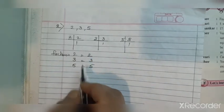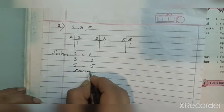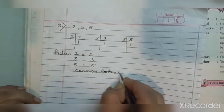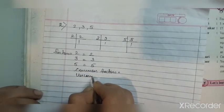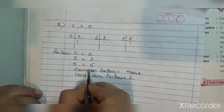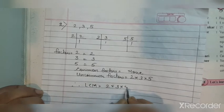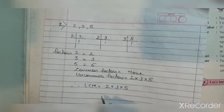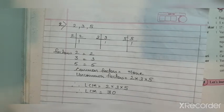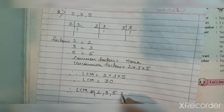Since 2, 3, and 5 are prime numbers, we have no common factors at all. When finding LCM we take the common and the uncommon, but here there is nothing in common, so the uncommon factors are 2, 3, and 5 — all three together. Therefore LCM = 2 × 3 × 5 = 30. Therefore LCM of 2, 3, and 5 is 30.